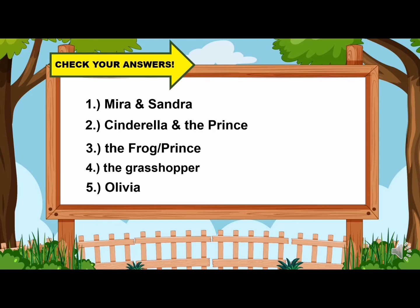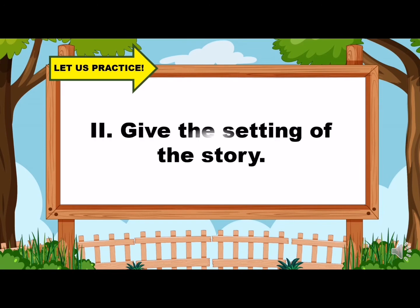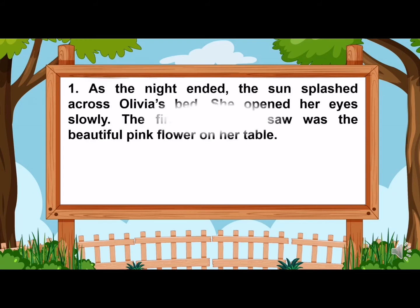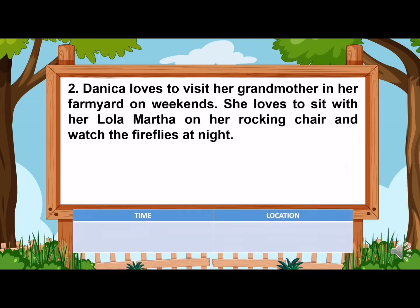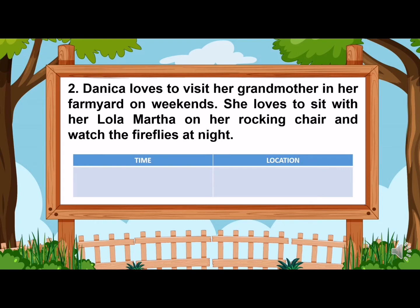For this part, you have to give the setting of the story. Number one: As the night ended, the sun splashed across Olivia's bed. She opened her eyes slowly. The first thing she saw was the beautiful pink flower on her table. Write the time and location. Number two: Danica loves to visit her grandmother in her farmyard on weekends. She loves to sit with her Lola Martha on her rocking chair and watch the fireflies at night. Write the time and location.